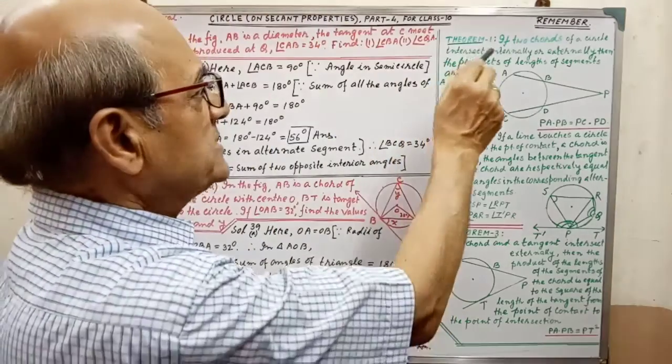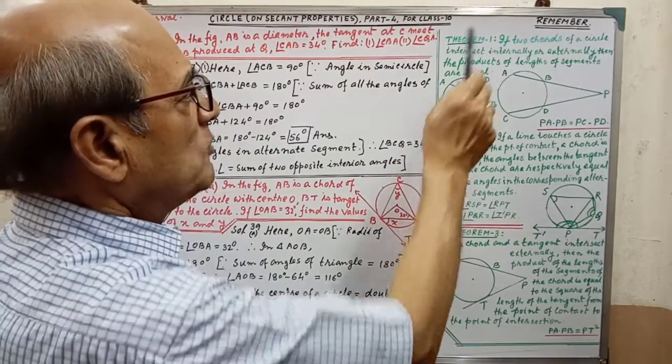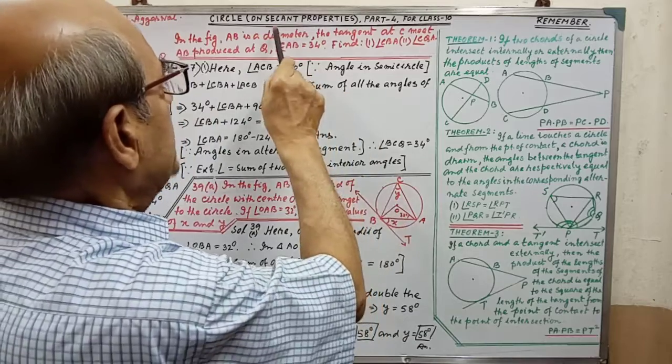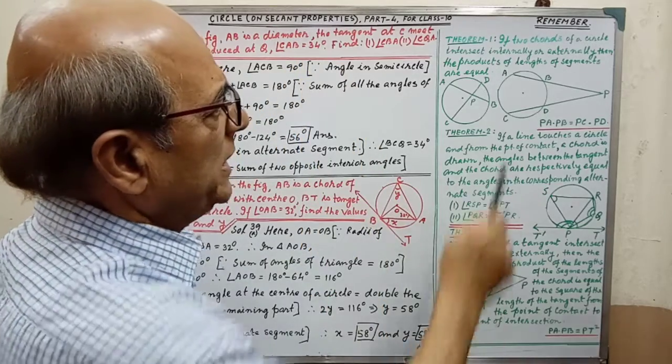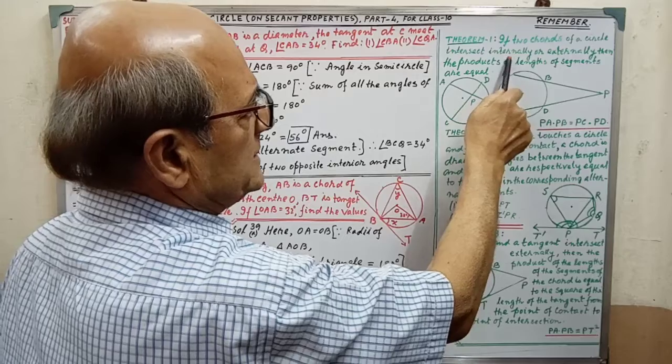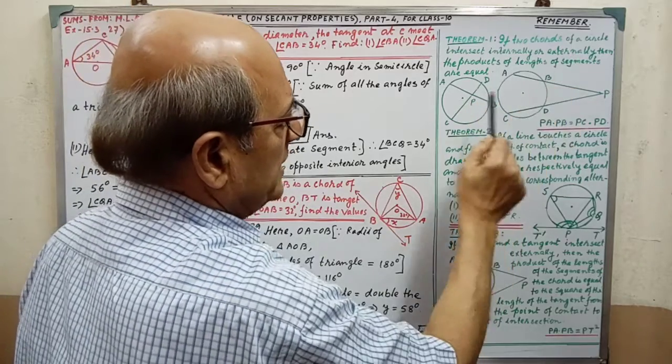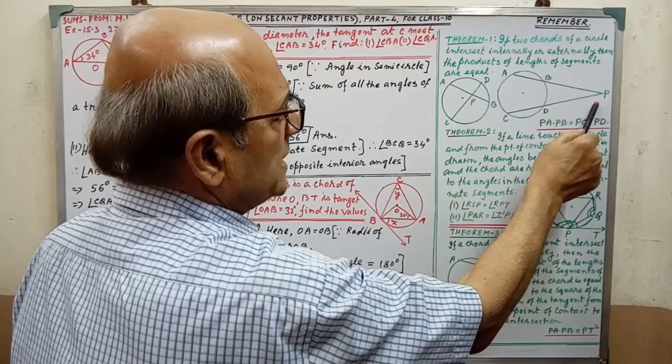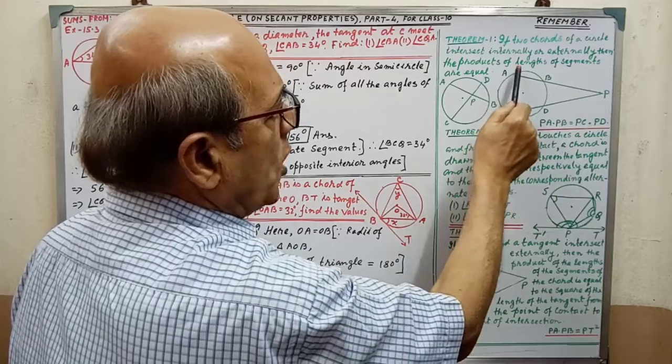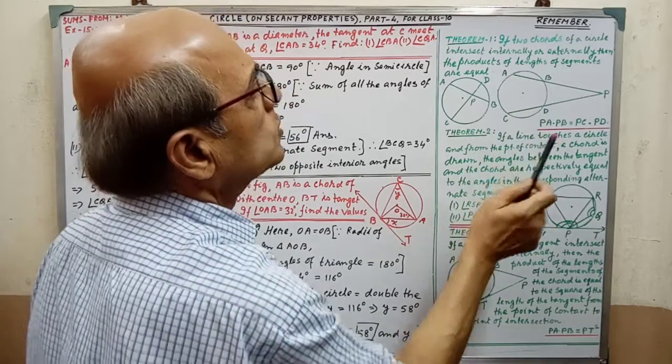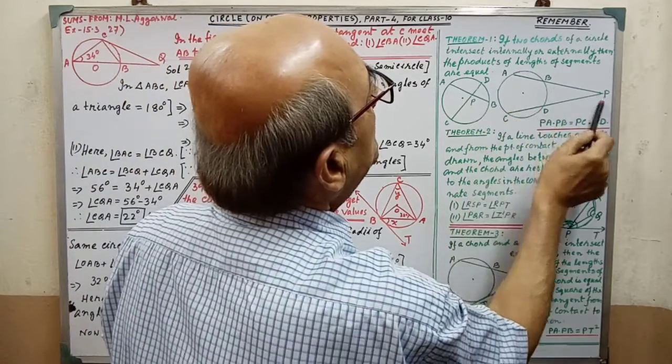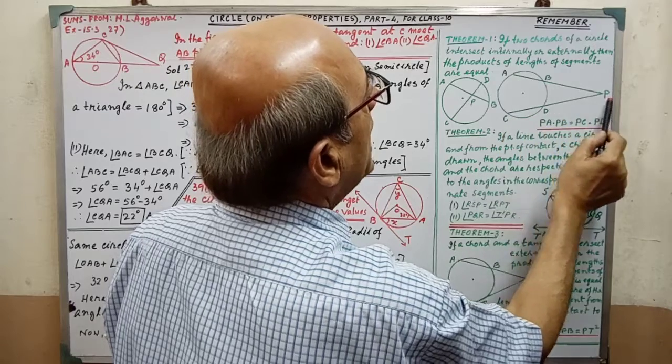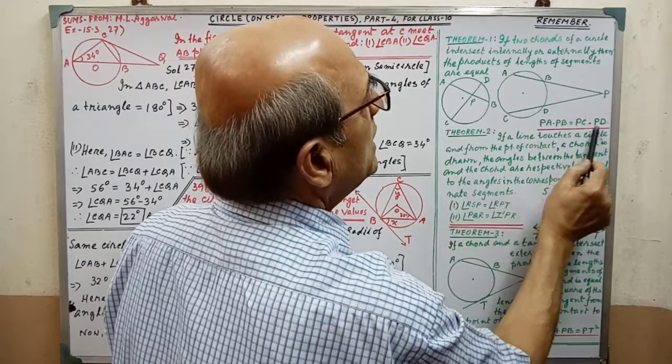Pay attention on both. Theorem 1 on second properties: if two cords of a circle intersect internally or externally, then the product of lengths of segments are equal. That is PA into PB and PC into PD equal.